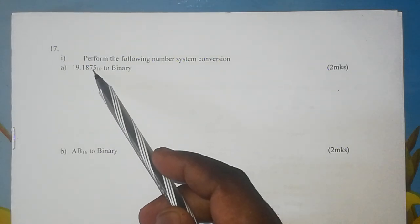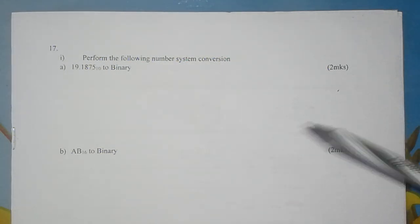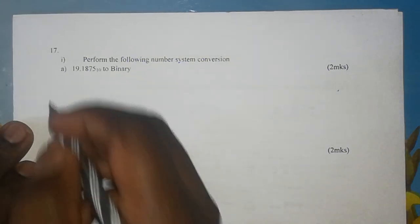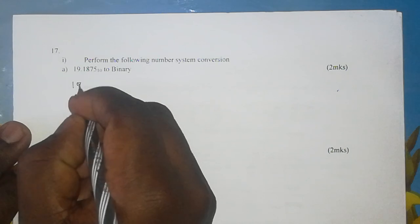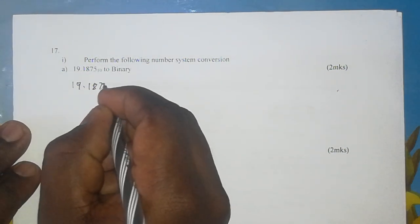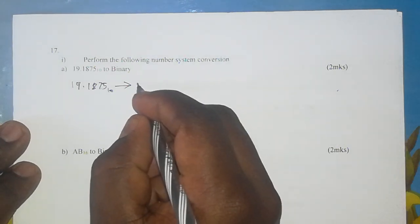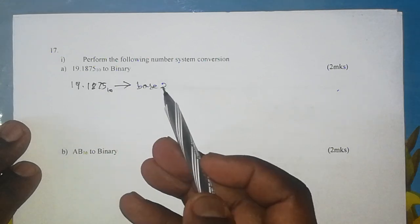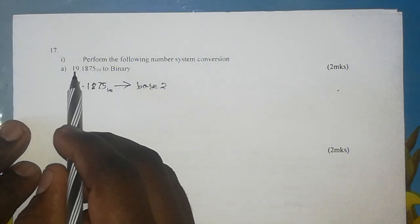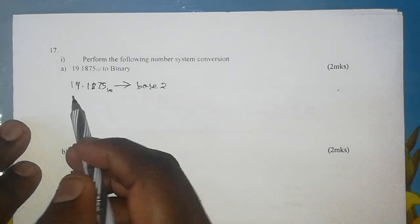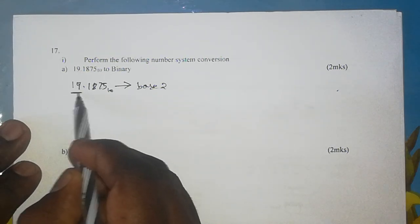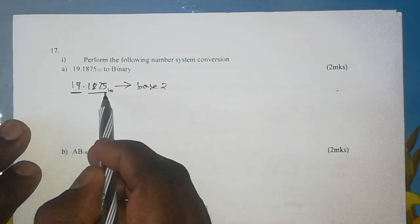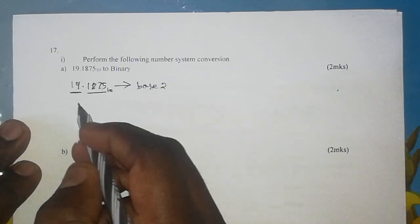A decimal number to a binary number or the binary equivalent. Let's get to it. Now, of course, the first thing to do is you rewrite your number as base 10, and we are converting this to base 2. The binary system is base 2. To convert such a number, we need to take care of the whole number and then we need to take care of the decimal point part or the fraction part. We will begin with the whole number part.